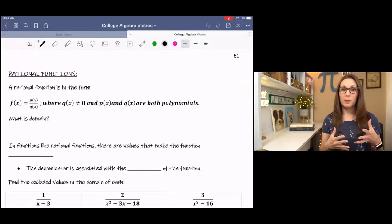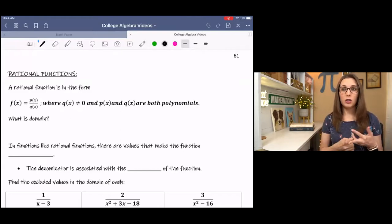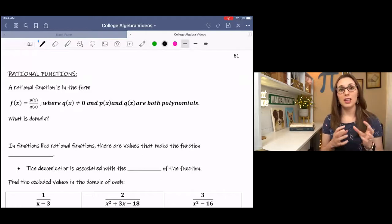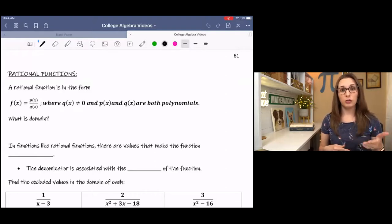Before I talk specifically about the domain of a rational function, let's do a quick review about what a rational function is and what domain is. So the definition of a rational function is that it is the quotient of two polynomials where the second polynomial cannot equal zero. I have the definition here on this paper. It says f(x) is p(x) over q(x) where p(x) and q(x) are just polynomials and q(x) specifically in the denominator cannot equal zero.